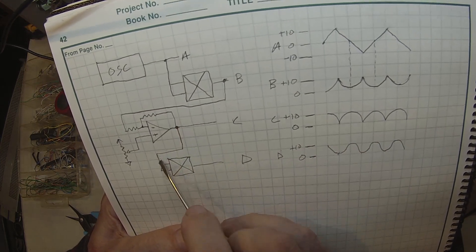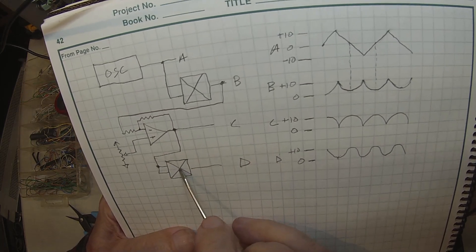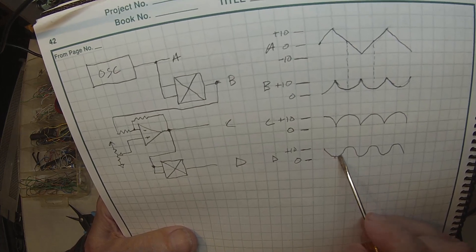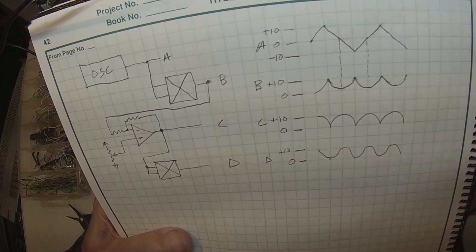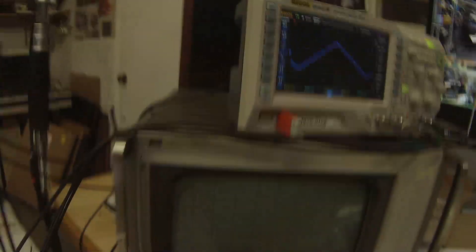Well, so then you feed that to another multiplier and square it, and lo and behold you get a beautiful sine wave. So we can look at the scope over here and see.